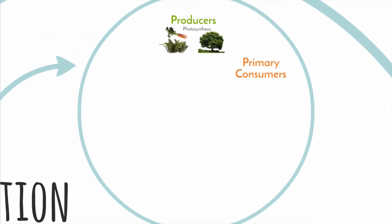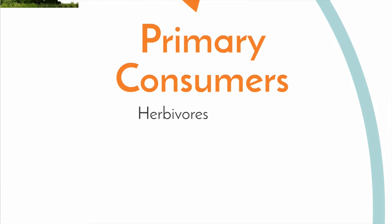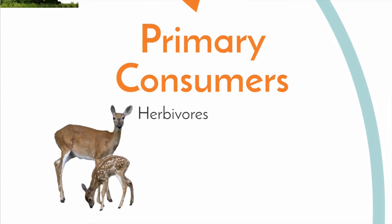Primary consumers are heterotrophic living things because they feed on producers, so they are herbivores.